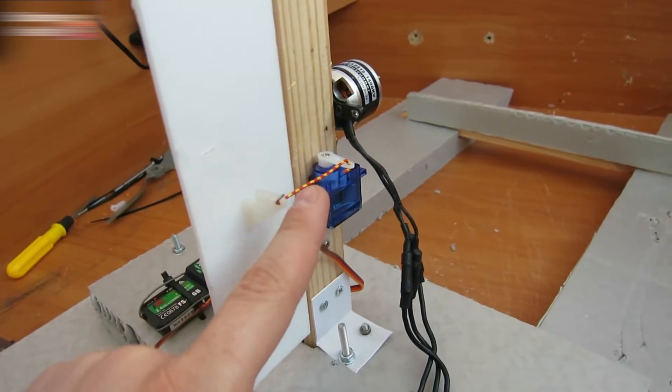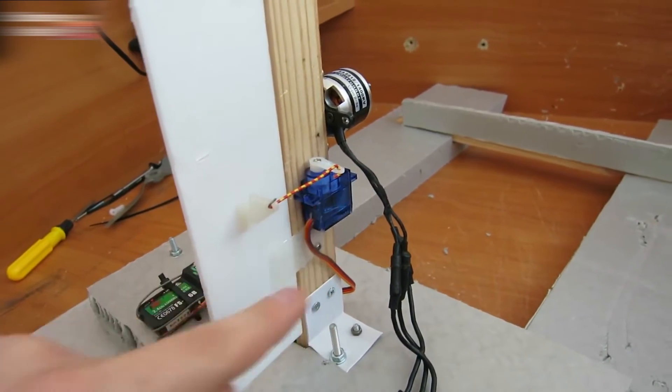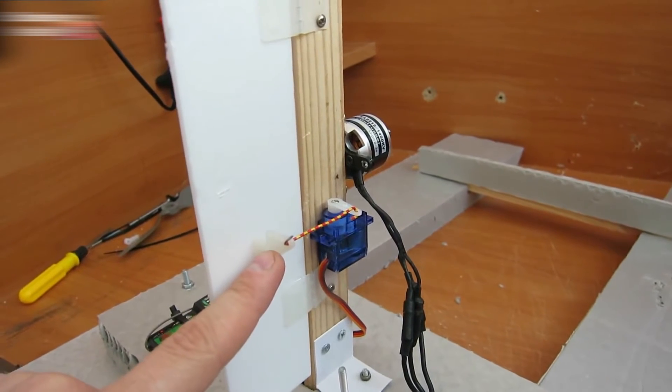Fasten the servo arm and connect it with a paper clip to this plastic piece attached to the rudder.